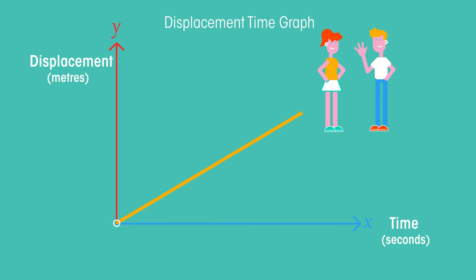If she walks slower, the line will be less steep, having a smaller gradient, because in the same amount of time she will travel less distance. If she walks faster, the line will be steeper.